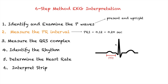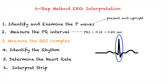Step three: measure the QRS complex. Just like the PR interval, measure the small boxes within the QRS complex. The normal range is 0.06 to 0.12 seconds. Anything more than 0.12 seconds could indicate a dysrhythmia such as a PVC.